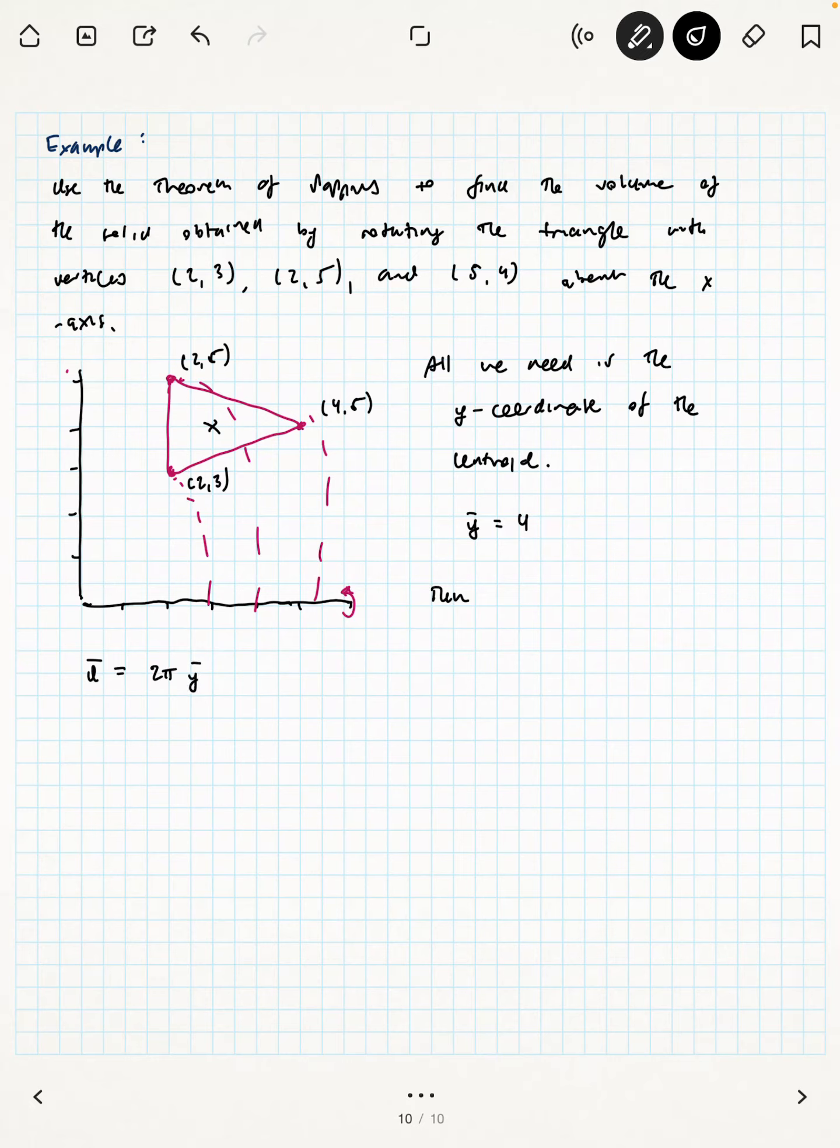And so we'll know the distance traveled by the centroid, which is then d̄ is 2πȳ, which is 2π times 8... 16π. Right.